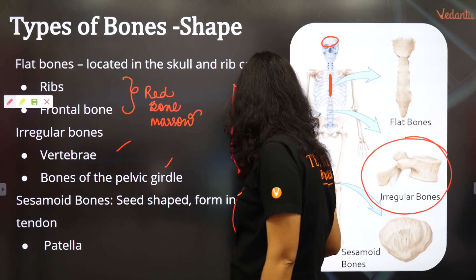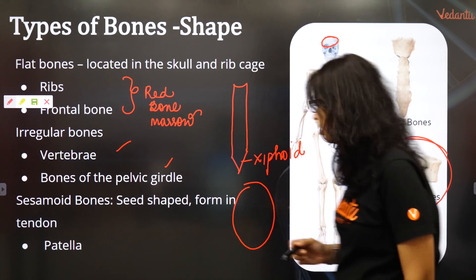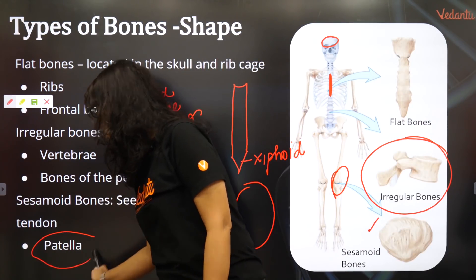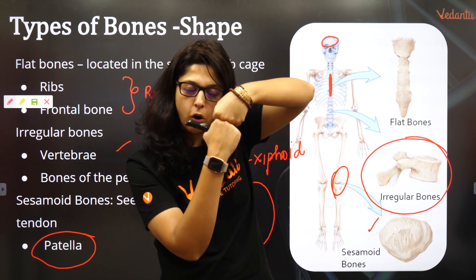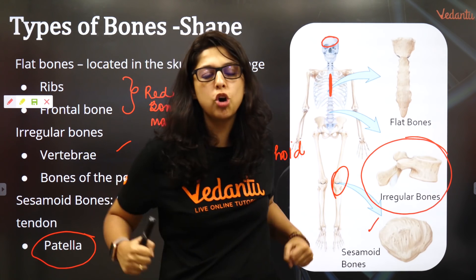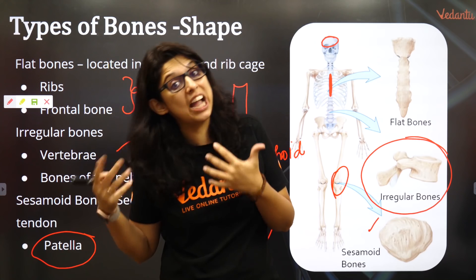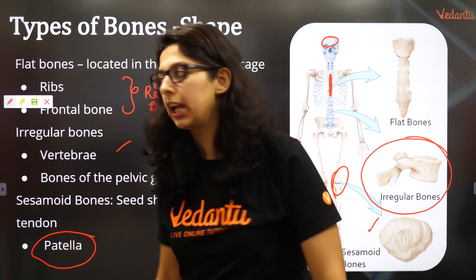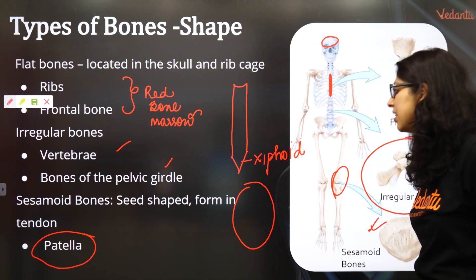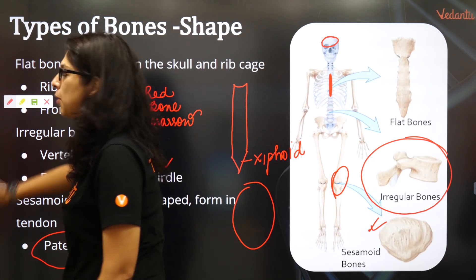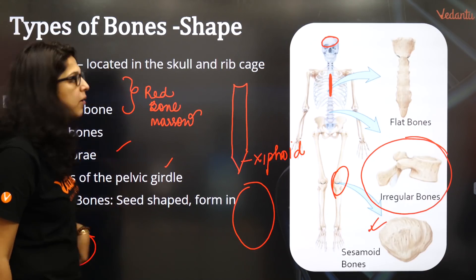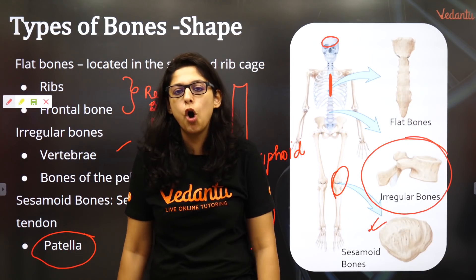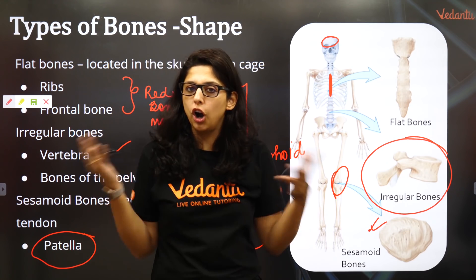Sesamoid bones are bones which are of the shape of a seed. The covering of the kneecap is called the patella. The kneecap, where the top and bottom of the knee joint anastomose in a synovial joint, is covered by the patella. The patella looks like a seed — that's why it's called a sesamoid bone. This brings us to the end of this lecture where we discussed long bones, short bones, flat bones, irregular bones, and seed-shaped bones — all types of bones.